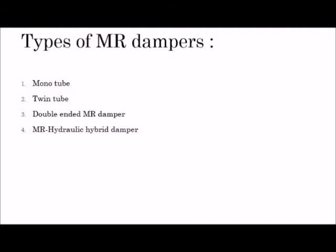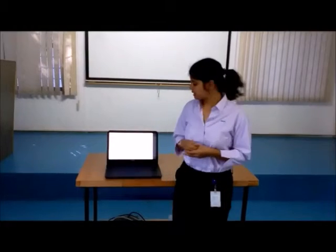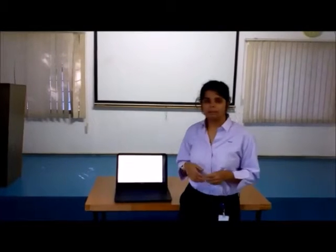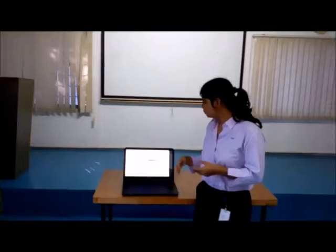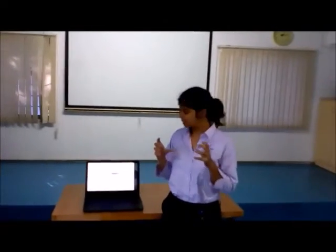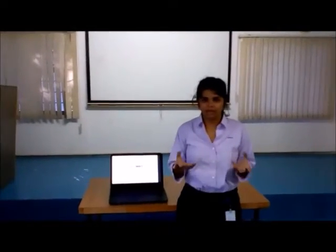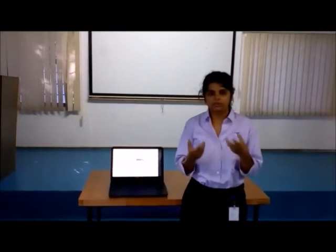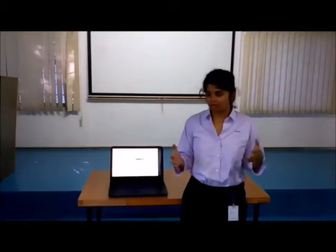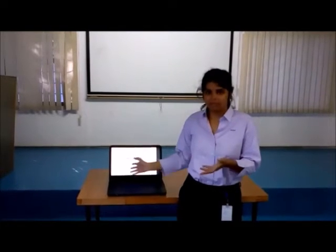There are various kinds of MR dampers in the market: the mono tube and twin tube dampers, the double-ended MR damper, and the MR hydraulic hybrid damper. The mono tube damper has a single reservoir for MR fluid and a gas chamber filled with nitrogen gas that accounts for changes in volume of the piston assembly as it moves.